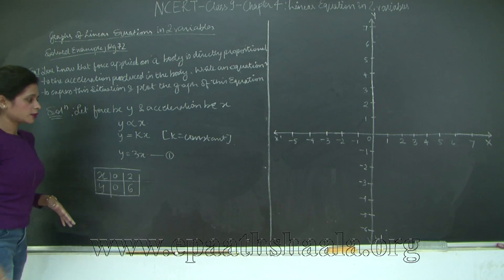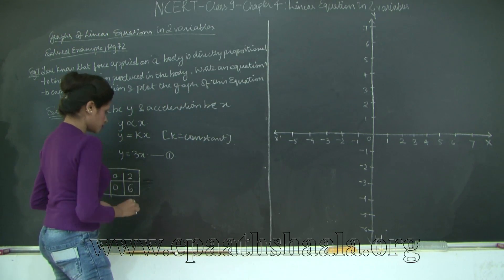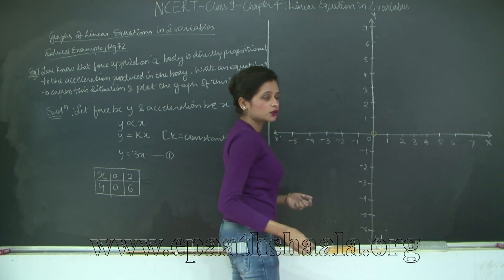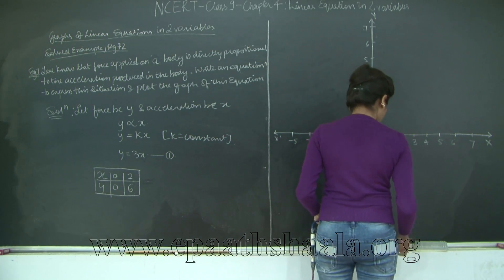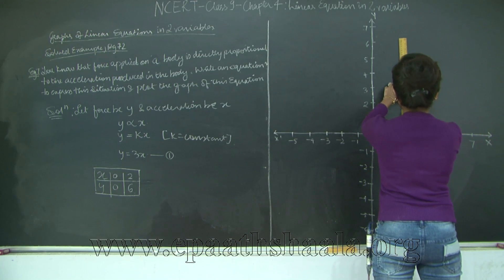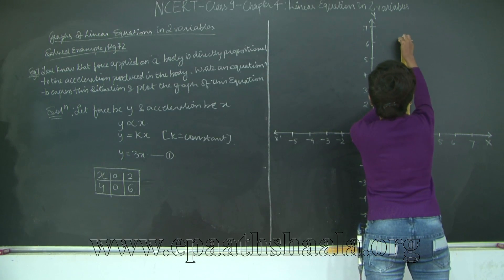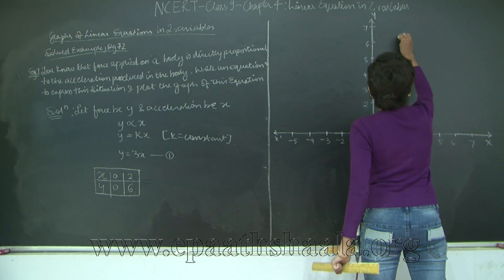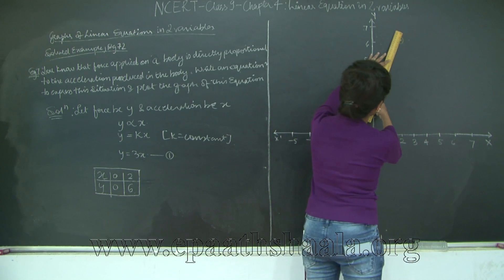Let's go ahead and plot our points. So my first coordinate is (0, 0) and my second coordinate is (2, 6). So here is my 2 and let's see where my 6 lies. This is 2 and 6 lies here. So I have 2 points which are enough to draw my graph.